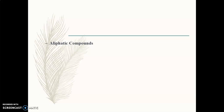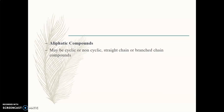We will see first what is the difference between aliphatic compounds and aromatic compounds. If you remember, we have seen different compounds like alkanes, alkynes, alcohols, ether, and esters. Whatever these compounds you have studied, they belong to the aliphatic compounds. What is the meaning of aliphatic compounds?